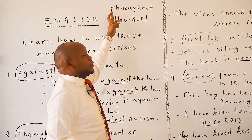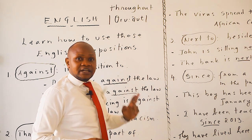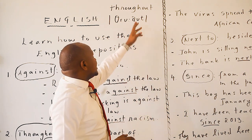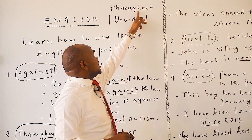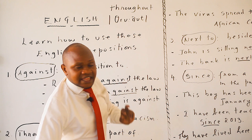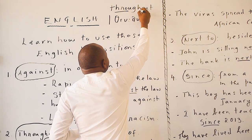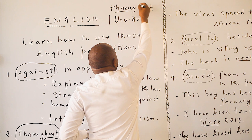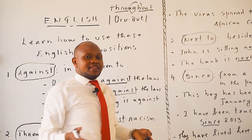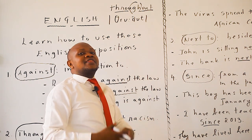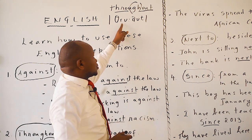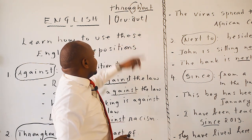We pronounce it as 'throughout.' We say 'through' — like this — then 'out': throughout. That is how to read this word. Very fantastic.